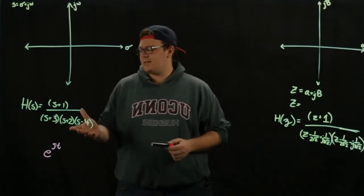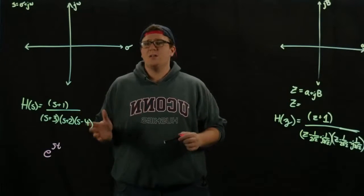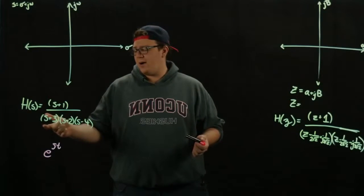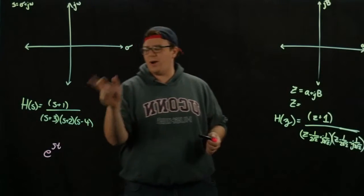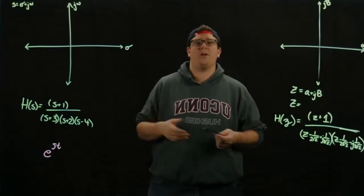The first thing I want to talk about is the notion of poles and zeros. Poles are where the denominator of your transfer function goes to zero, and zeros are where your transfer function's numerator goes to zero.